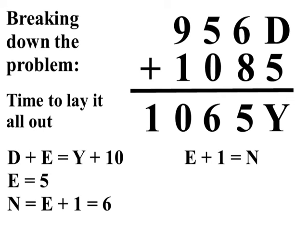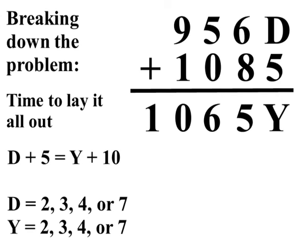Now, how about the last two, D and Y? D plus 5 equals Y plus 10, because we know one was carried over there. Now, we have four numbers left: 2, 3, 4, and 7.